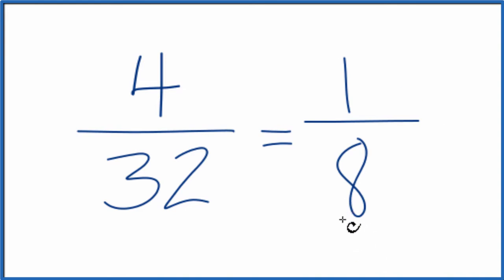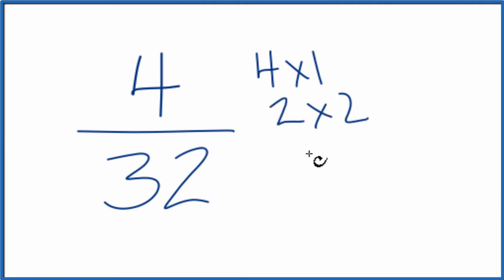If you didn't know that 4 went into 32 evenly, you could try to figure the factors out for each one of these. Let's do that. 4 times 1, that would give us 4, and 2 times 2. Those are the factors for 4.